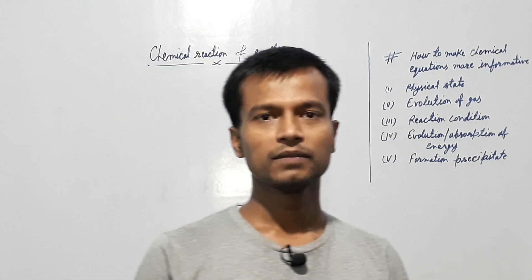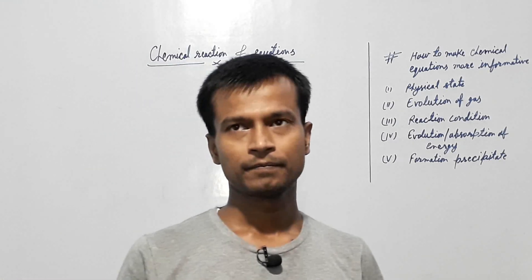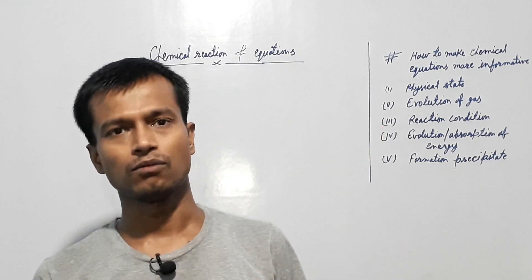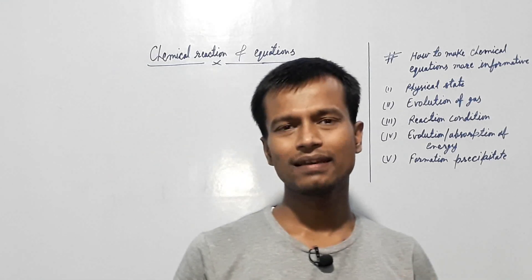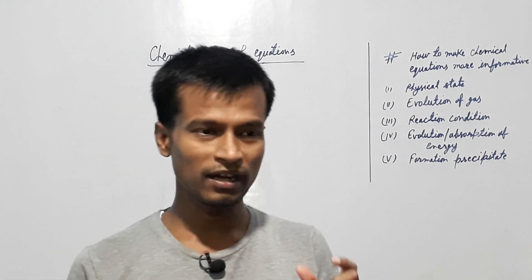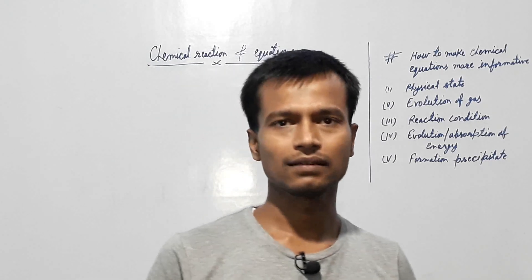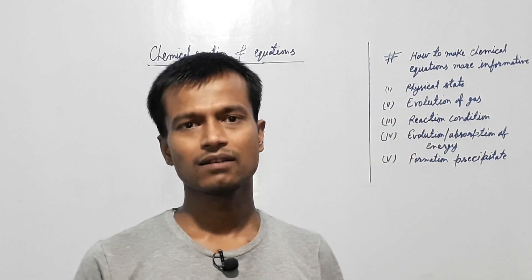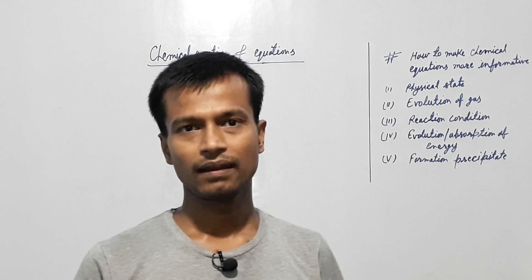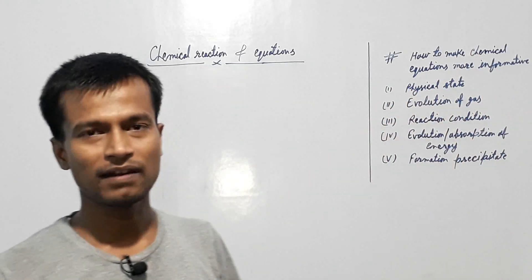Today I am going to explain how a chemical reaction or chemical equation can be made more informative. If we write our chemical equations with additional details, then we can collect a lot of information from them. This is very important in chemistry. Today we will start with how to make chemical equations more informative, and we will look at different types of chemical reactions.